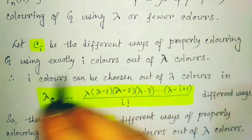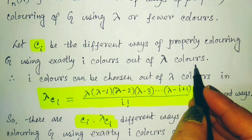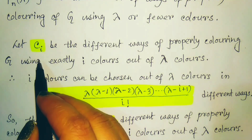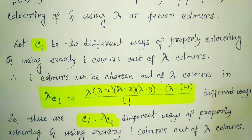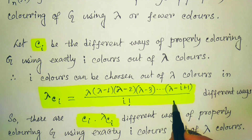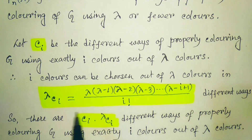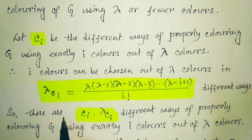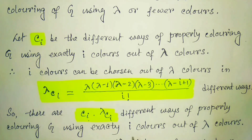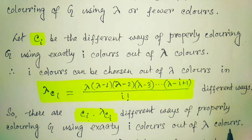Let's find the different ways of properly coloring G using exactly i colors out of λ colors. If there are total λ colors considered and out of λ, i number of colors are required to color G properly, then the number of different ways to color graph G is denoted by C_i. We can use the binomial coefficient to find out C_i. Here, i colors can be chosen out of λ colors in λC_i ways — that is the binomial coefficient. So, there are C_i × λC_i different ways of properly coloring G using exactly i colors out of λ colors.